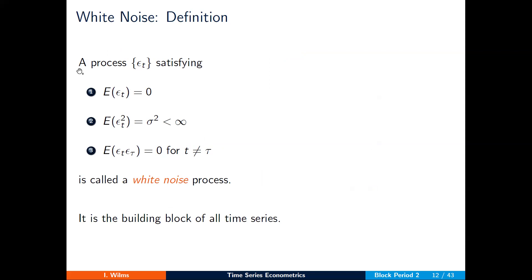A stochastic process is said to be white noise if it satisfies the following three properties. First, the expected value needs to be the same for all time points t and should be equal to zero. Second, the variance should be finite and the same for all time points t. Third, the autocovariance should be equal to zero.